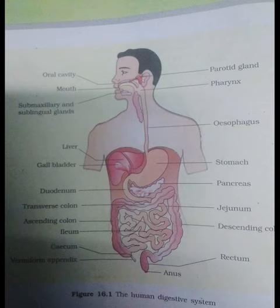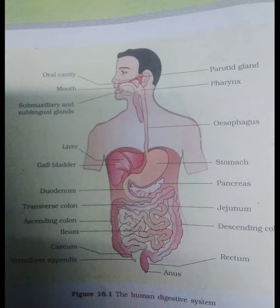Carbohydrates are digested and converted into monosaccharides like glucose. Proteins are finally broken down into amino acids. The fats are converted into fatty acids and glycerol. The digestion products are absorbed into the body through the epithelial lining of intestinal villi.